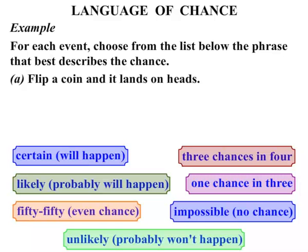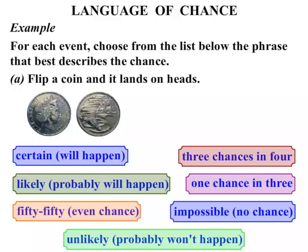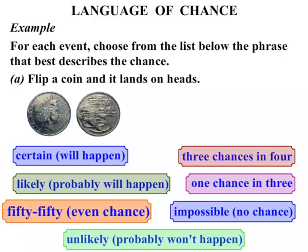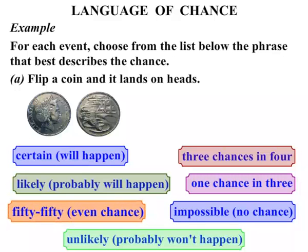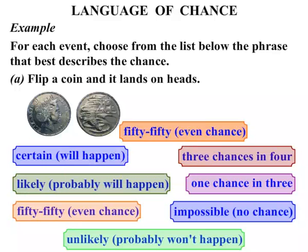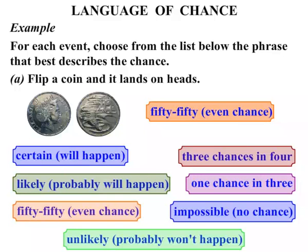The first one: what happens if we flip a coin and it lands on heads — what's the chance? Well, it could land on a head or it could land on a tail, so that's equally likely. So we say that it's 50-50, it's an even chance.